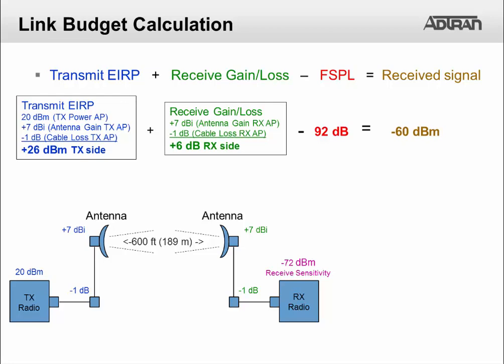To achieve the customer's required design rates, the receiver sensitivity needs to be negative 72 dBm. Is the link possible? Our fade margin is 12 dB which is greater than our 10 dB requirement. So yes, this link is possible.